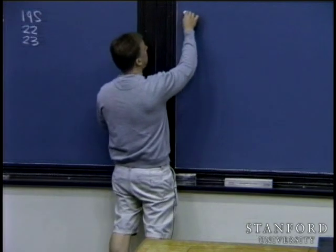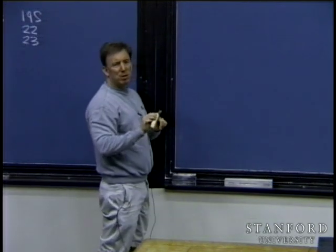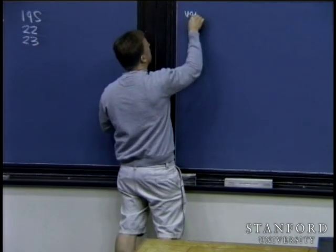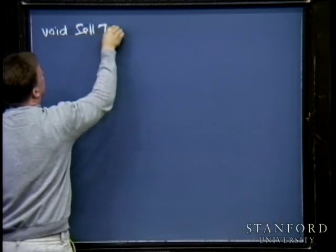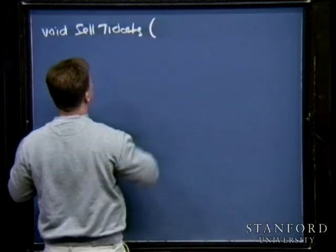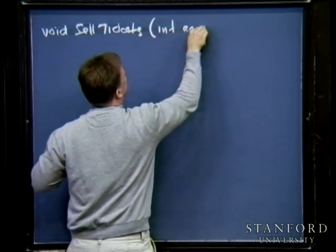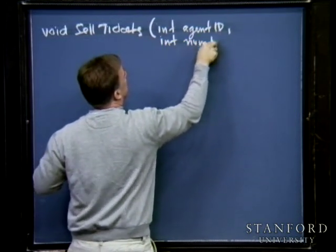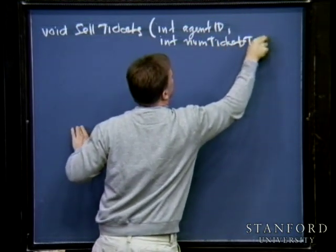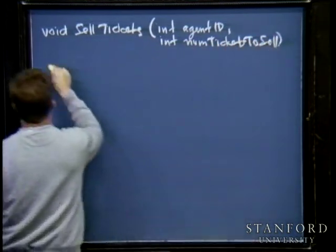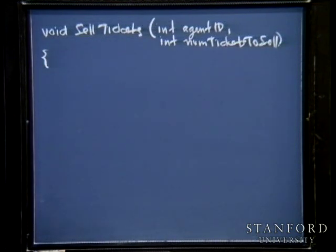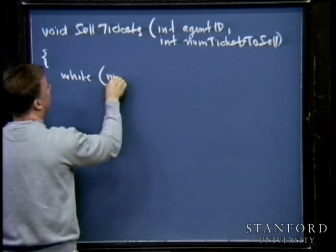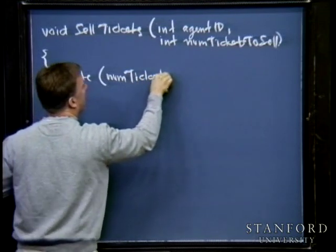I'm going to write it a little differently, paying forward to the way we'll change the example in a moment. The function is: void sell_tickets(int agent_id, int num_ticks_to_sell). Even though it's a little weird, let me use a while loop instead of a for loop — while num_ticks_to_sell is greater than zero...